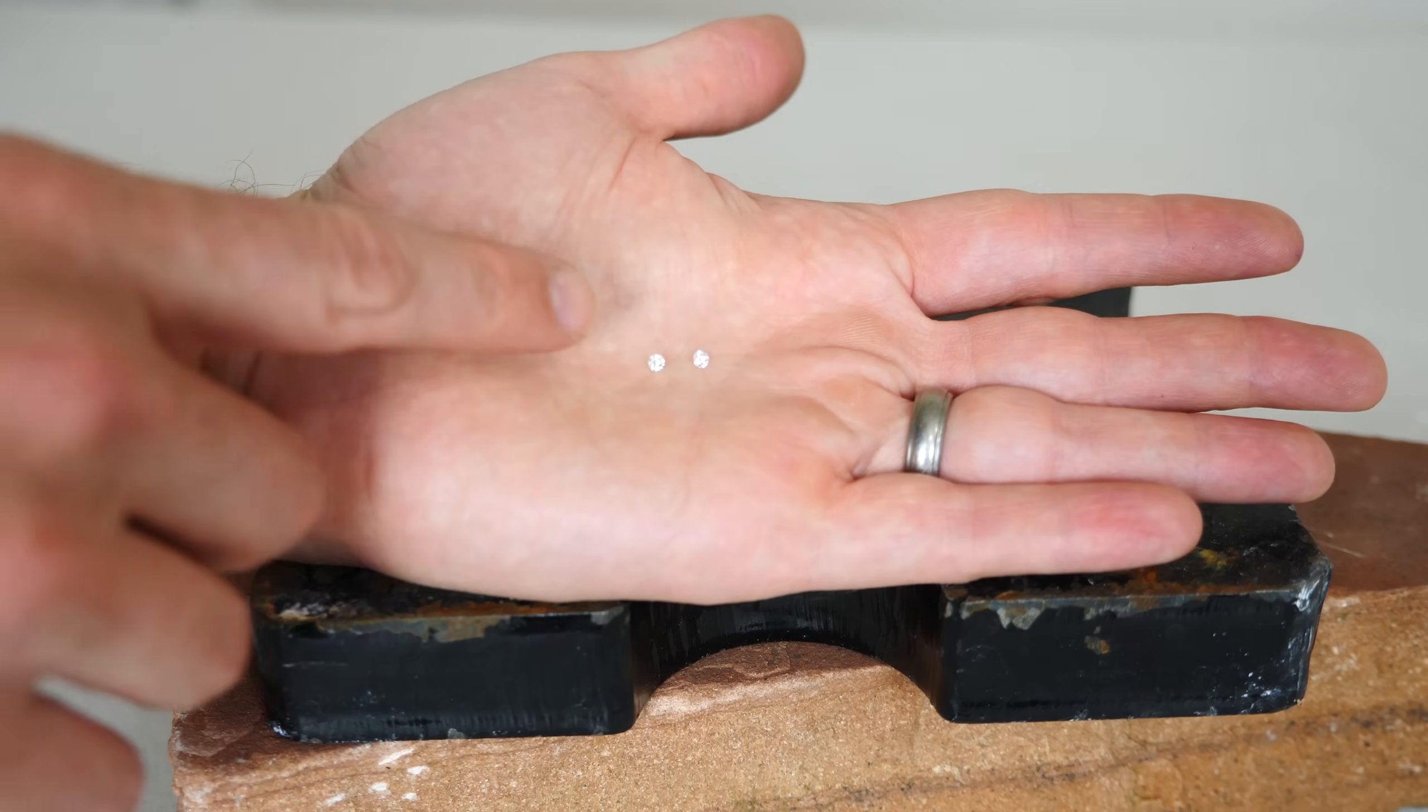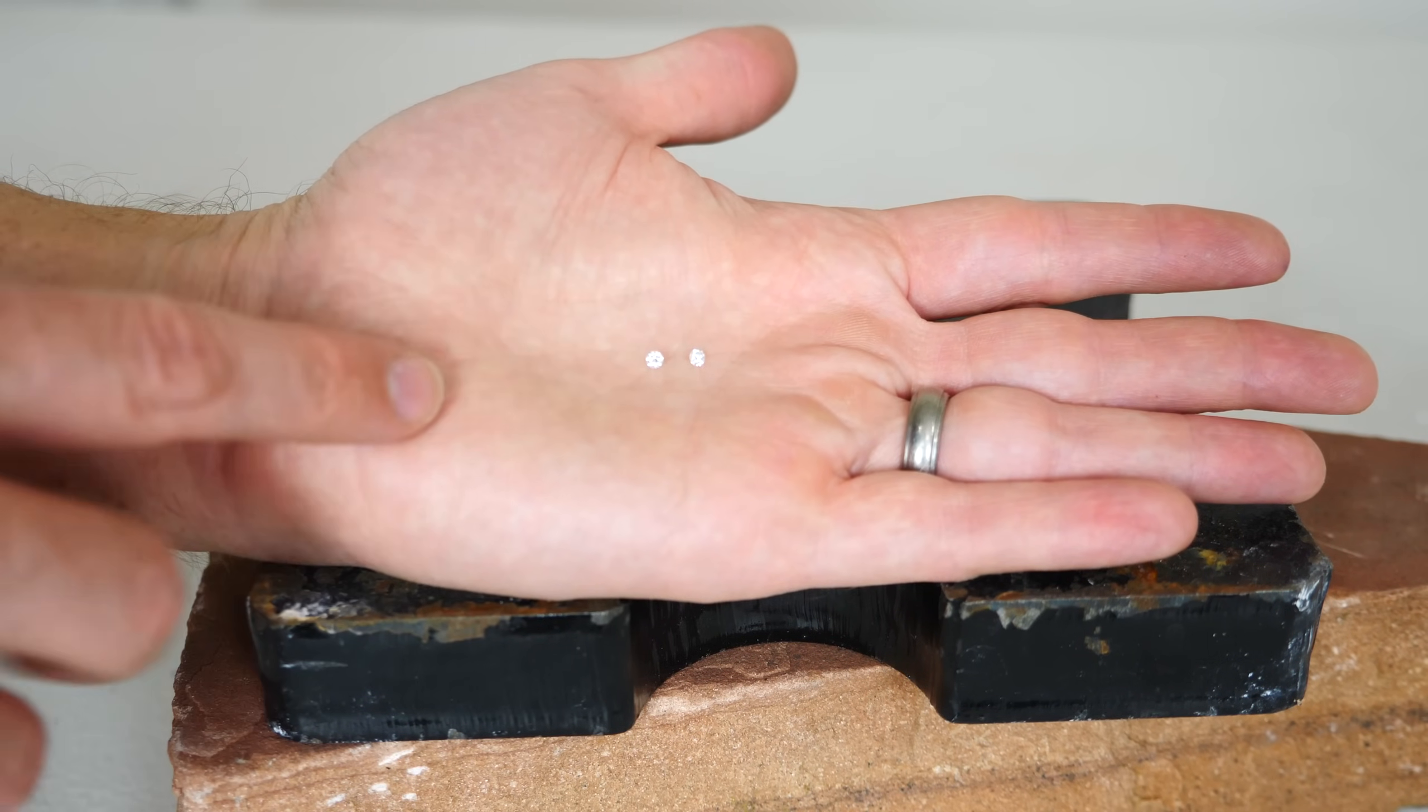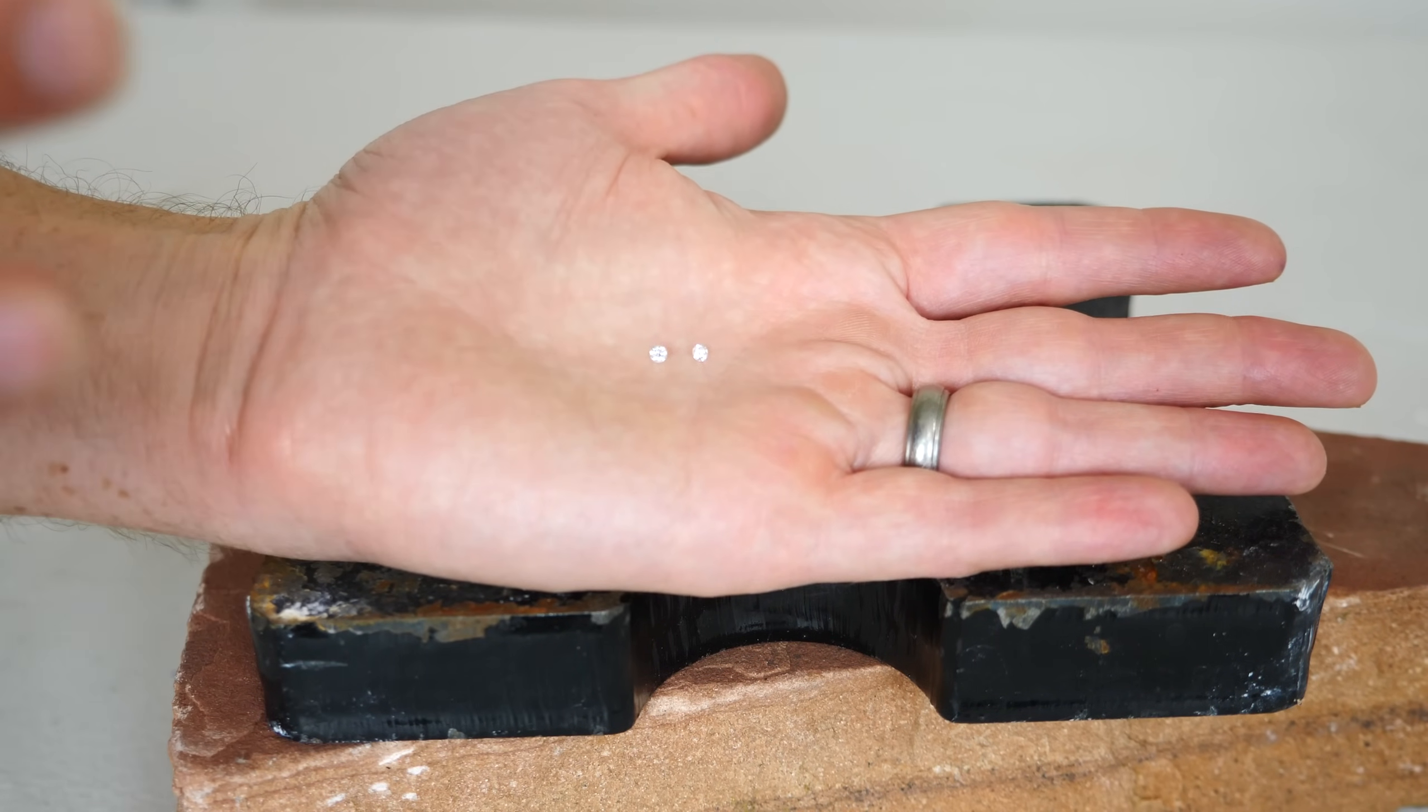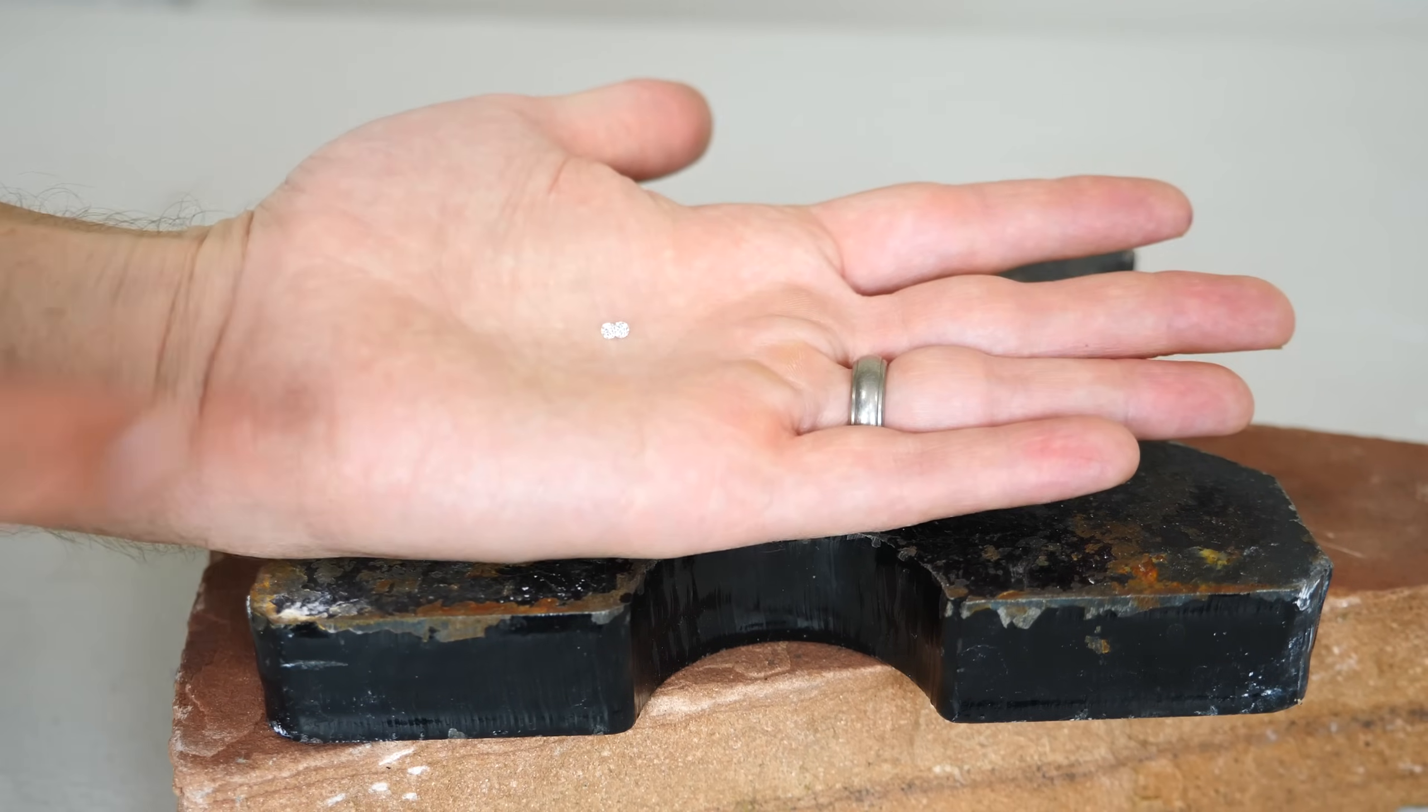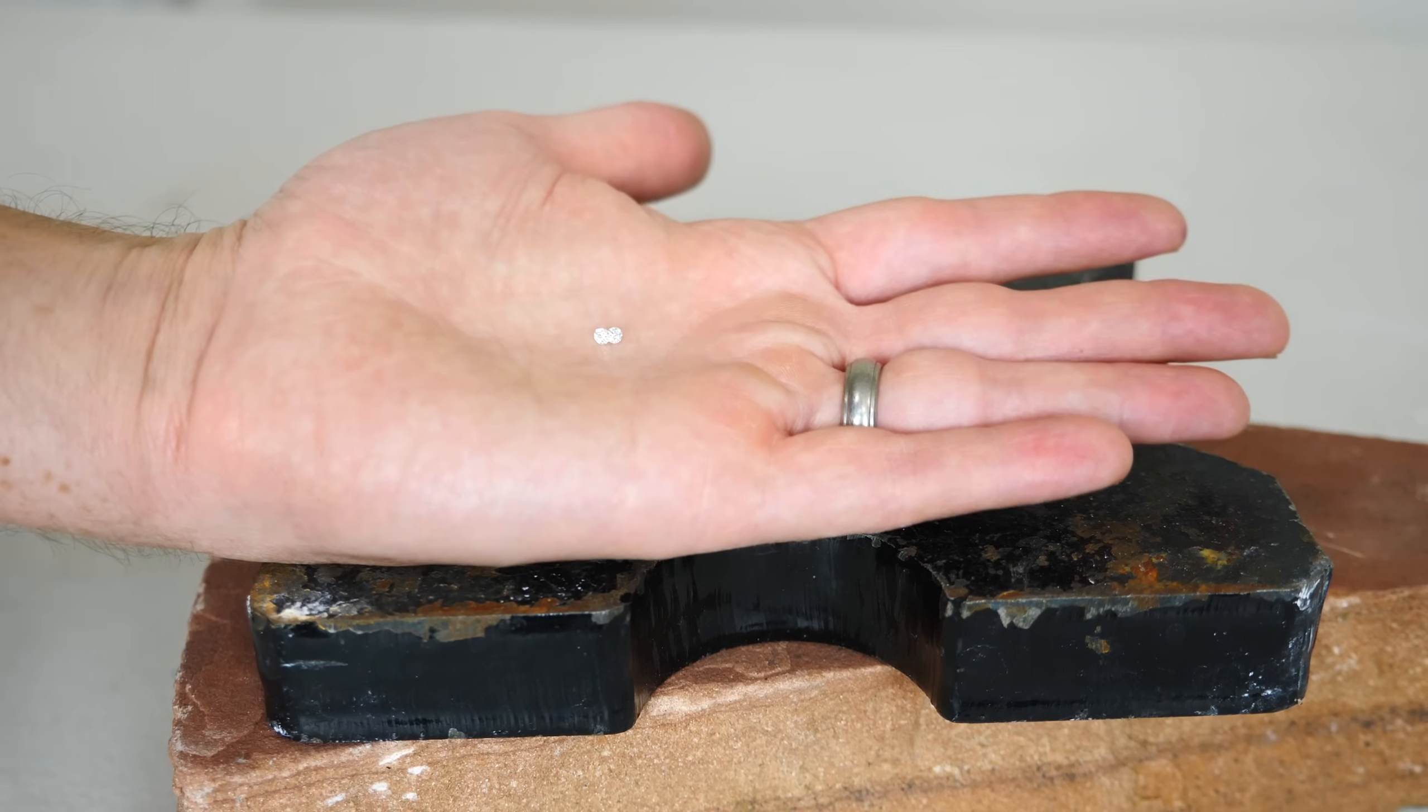So the question is, if diamonds are the hardest material in the world, how could they ever chip? What would they chip against? Well, I've always wondered if you could just take a hammer and smash a diamond.